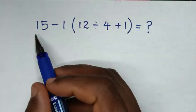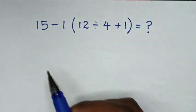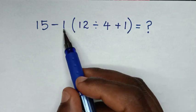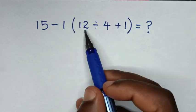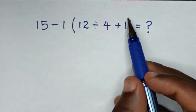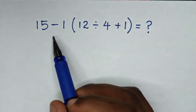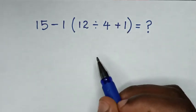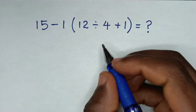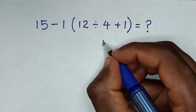Hello, you're welcome. Let's solve this math problem: 15 minus 1 bracket 12 divided by 4 plus 1 bracket. We'll solve it using BODMAS rule.